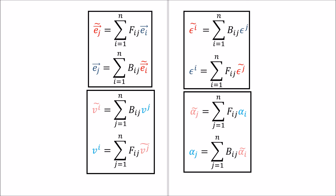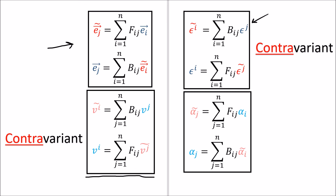Here is a summary of all the transformation rules covered so far. Basis vectors transform by the forward transform. Vector components were found to transform in the opposite way — contravariant. Basis co-vectors also transform in the opposite way to basis vectors, so they too follow the contravariant rule. Co-vector components, however, transform in the same way as basis vectors — covariantly — which is why we write their indices on the bottom, just like basis vectors. That finishes co-vectors. In the next video, we'll talk about our third example of a tensor: the linear map.